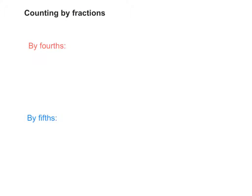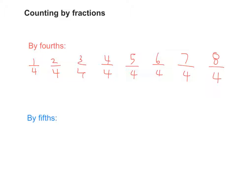Let's first skip count by fourths: one fourth, two fourths, three fourths, four fourths, five fourths, six fourths, seven fourths, eight fourths. Let's stop there. I wrote down what you counted. Can we simplify any of these fractions? We're going to skip count by fourths again, but this time instead of saying improper fractions or unsimplified fractions, we're going to say each fraction in its simplest form.